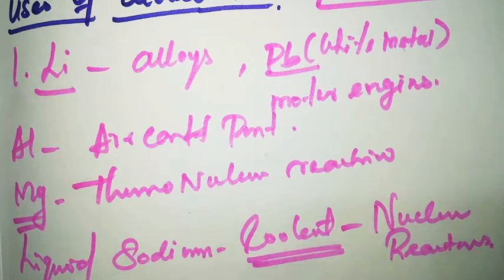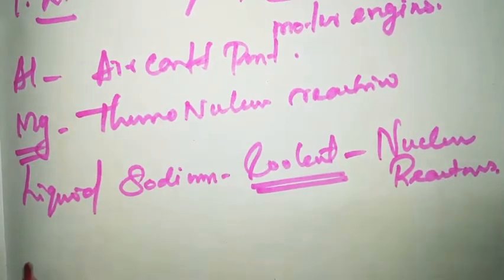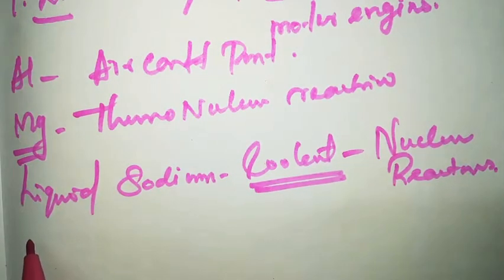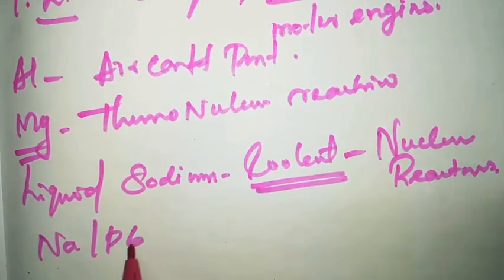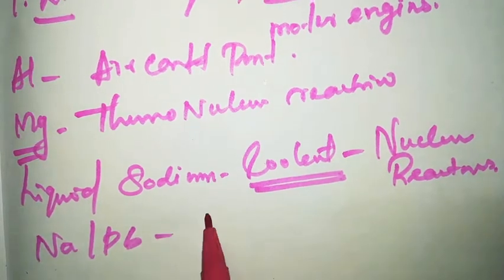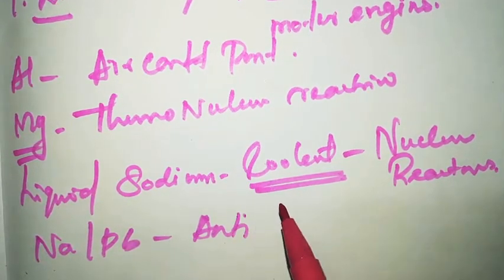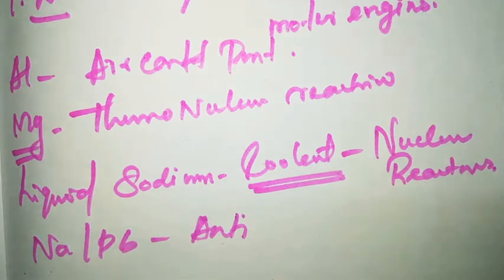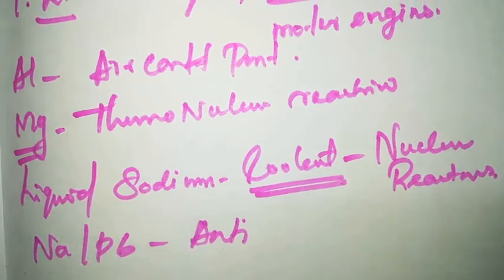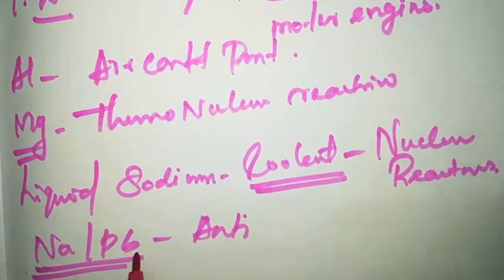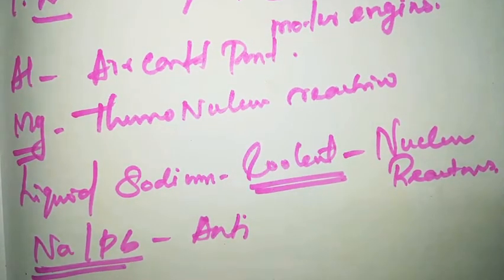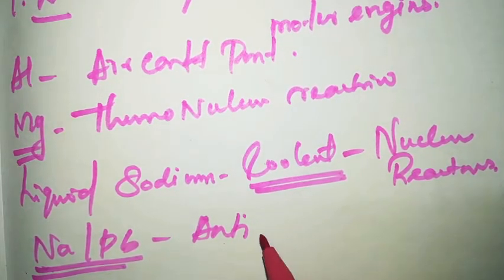The sodium and lead combination forms an alloy used as an anti-knock additive to petrol. This combination of sodium and lead is used in the composition of anti-knock additives for petrol.